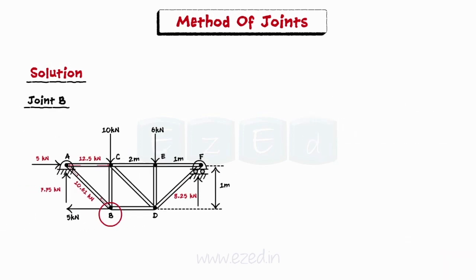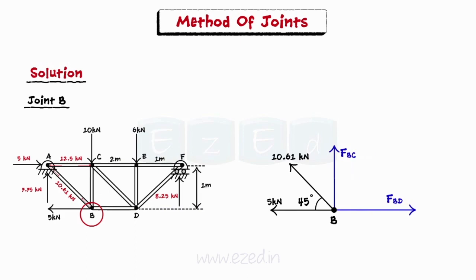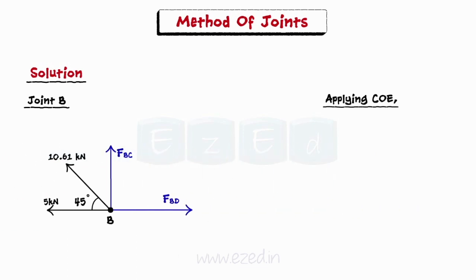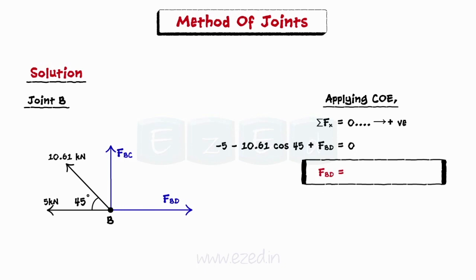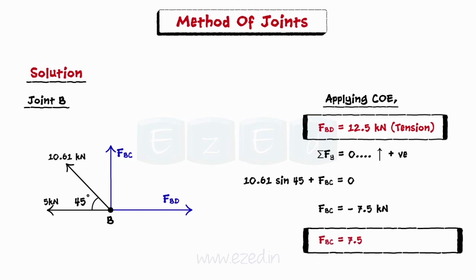Next, we isolate joint B as there are only two unknown members BD and BC. We initially assume the members to be in tension and apply conditions of equilibrium to joint B. Equating the summation of all forces in the x direction to zero, the force in member BD is 12.5 kN, tensile in nature. Then, equating the summation of all forces in the y direction to zero, the force in member BC is 7.5 kN, compressive in nature.